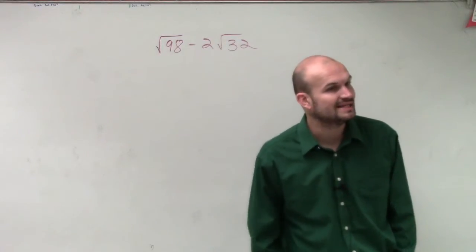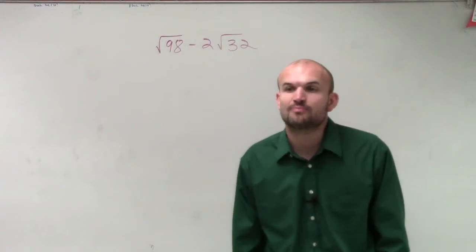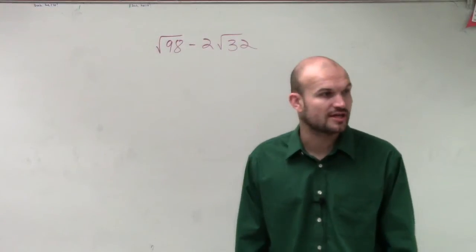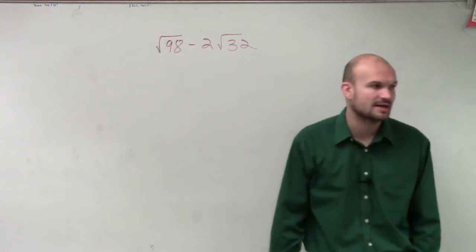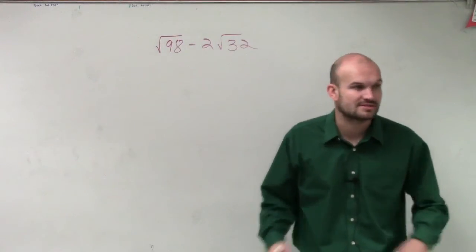ladies and gentlemen, to be able to combine these, the only way you can combine your radicals is to make sure that they're like terms. Obviously, the square root of 98 and the square root of 32 are not like terms. And you cannot just simply say